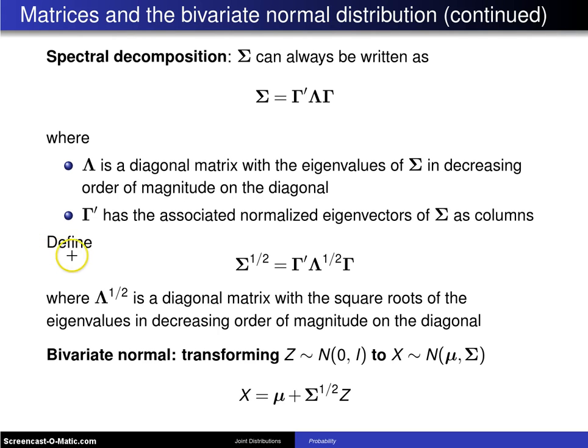So if we then define the matrix sigma to the one-half power as gamma prime times lambda to the one-half power, where lambda to the one-half power is the diagonal matrix of the square roots of the eigenvalues in decreasing order of magnitude, and those are the eigenvalues of the variance covariance matrix.